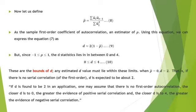As a rule of thumb, if D is found to be 2 in an application, one may assume there is no first-order autocorrelation. The closer D is to 0, the greater the evidence of positive serial correlation, and the closer D is to 4, the greater the evidence of negative serial correlation.